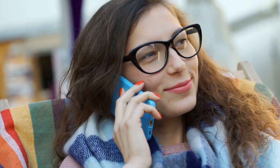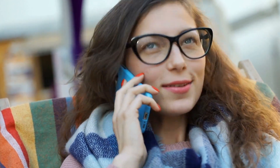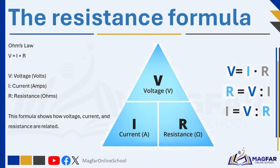In electrical systems, the relationship between resistance, current, and voltage is shown in the formula V = I × R, where V is the potential difference in volts, I is the current in amperes, and R is the resistance in ohms.